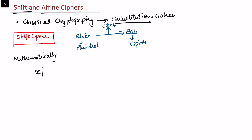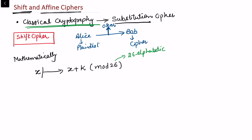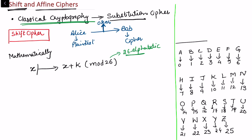Mathematically, in shift cipher, if you have a plain text — let me denote the plain text as x — this x is shifted by k units with respect to modulo 26. We use modulo 26 because there are 26 alphabets. This is classical cryptography, so it deals with the 26 alphabets. The alphabets are numerically equivalent: A is 0, B is 1, C is 2, and so on, with Z being 25.